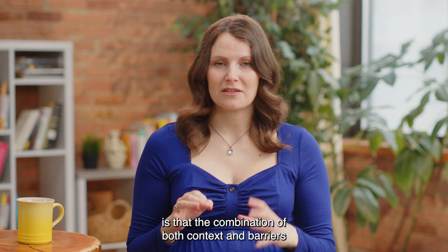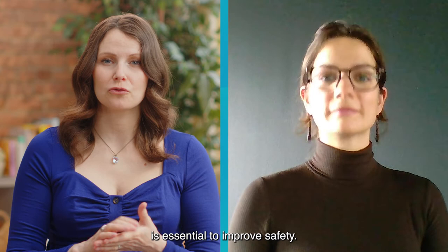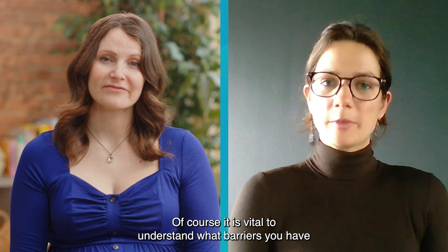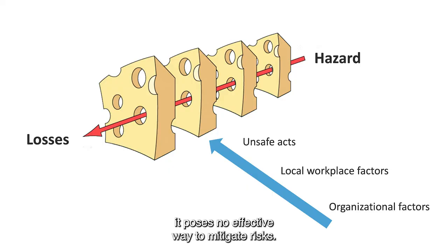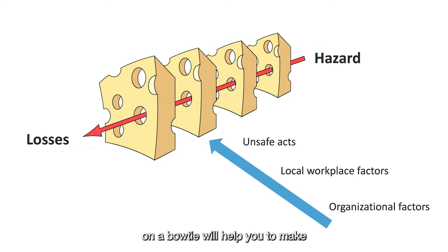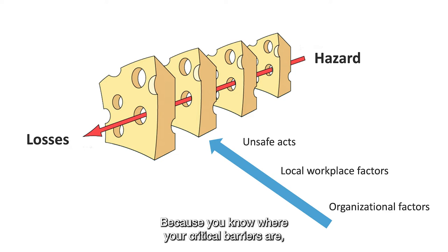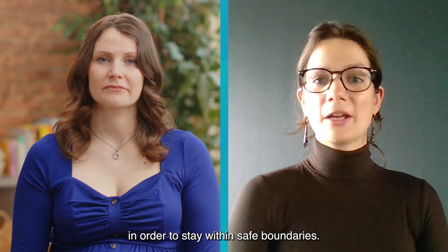So what you're basically saying is that the combination of both context and barriers is essential to improve safety. Exactly that. It is vital to understand what barriers you have and how they are functioning. But if you don't understand their position in a realistic context, it poses no effective way to mitigate risks. Seeing all of the barriers aligned on a Bowtie will help you make better decisions, because you know where your critical barriers are, how accountability is distributed, and what tasks need to be done in order to stay within safe boundaries.